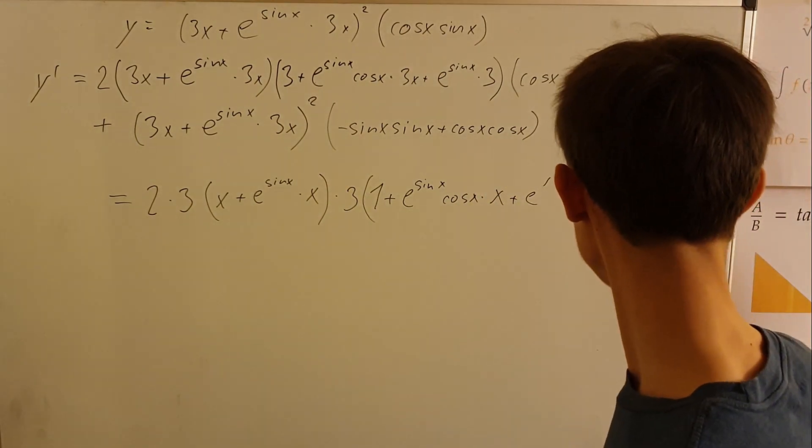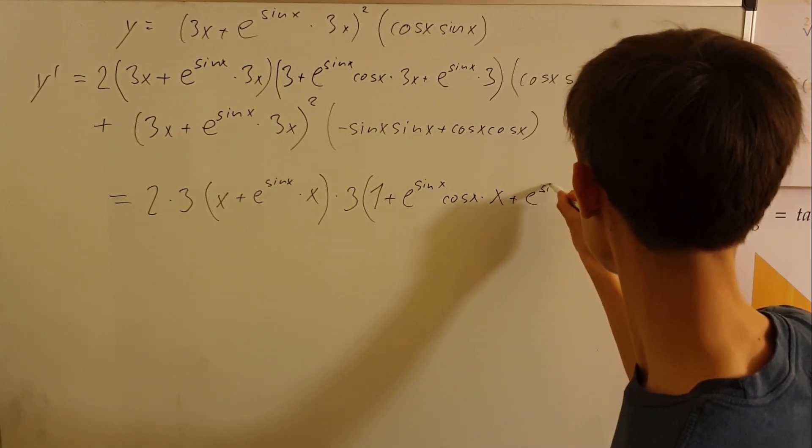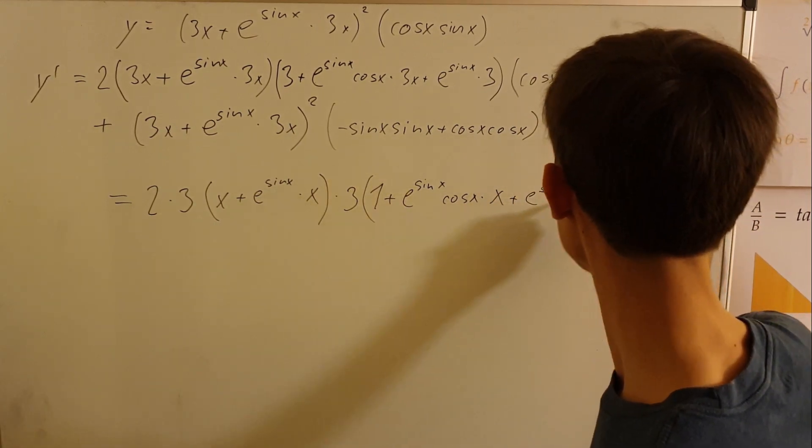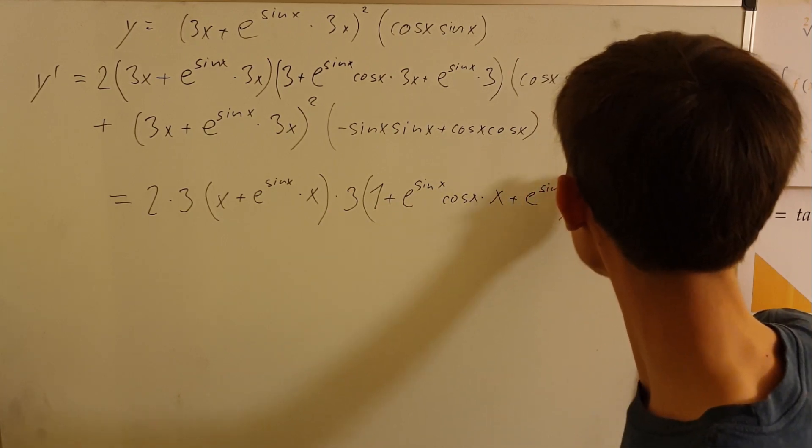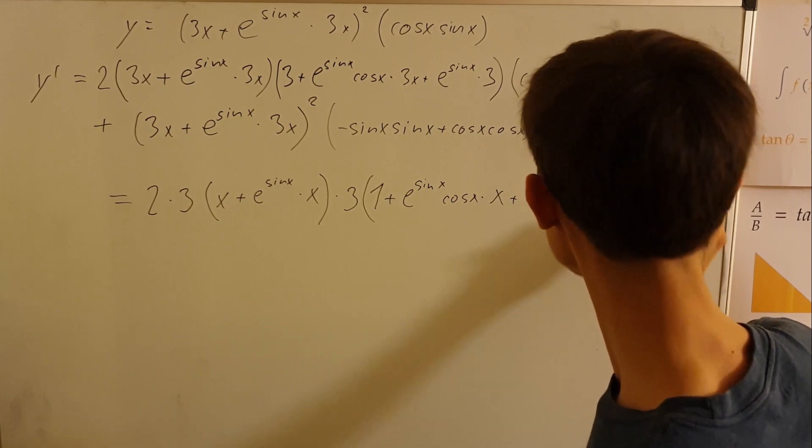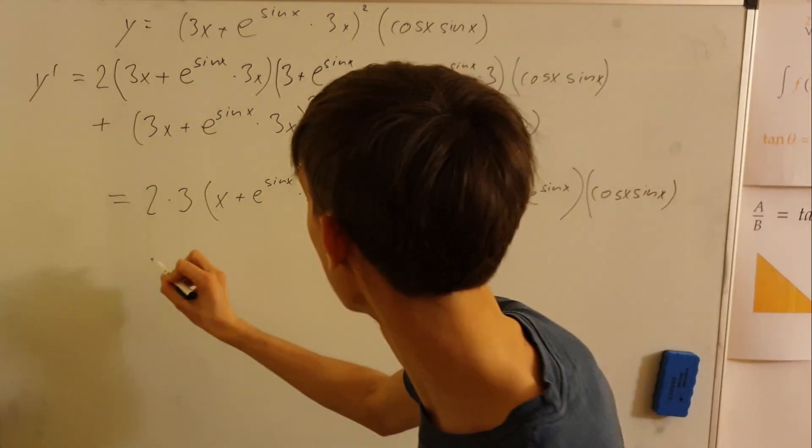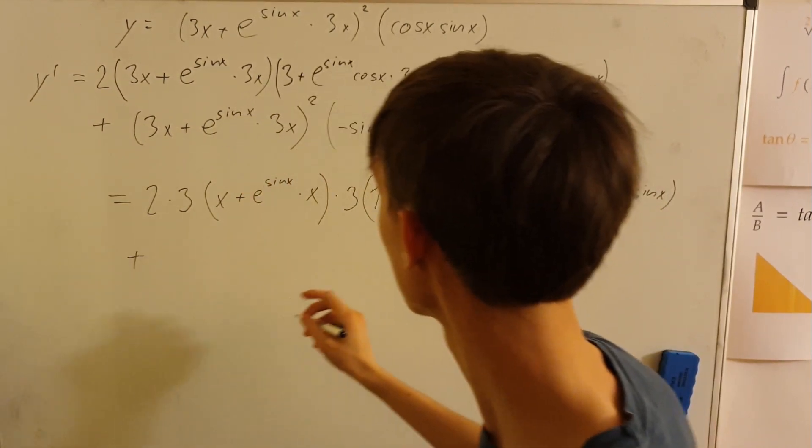So it will be one plus e to sin x cosine x times x plus e to sin x times just 1, and then cosine x sine x and then all of that plus